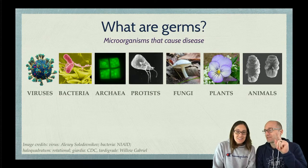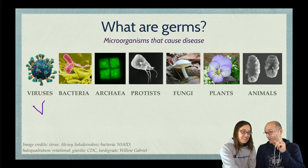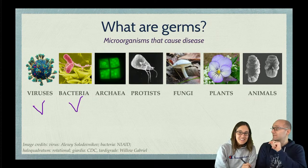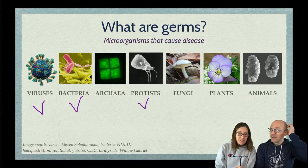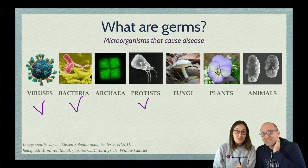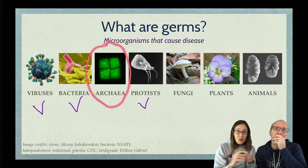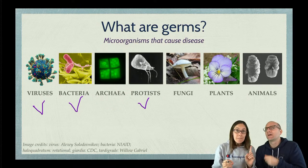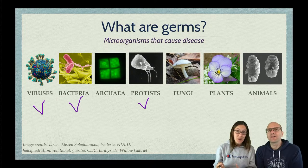Viruses are definitely germs. Bacteria are also germs. Germs can be a protist — some germs are protists. Several people are saying that all of the first four are germs, but remember archaea are also prokaryotes — they're prokaryotic cells, really simple, similar to bacteria. But we actually don't know of a single archaea that causes a disease or is a pathogen.